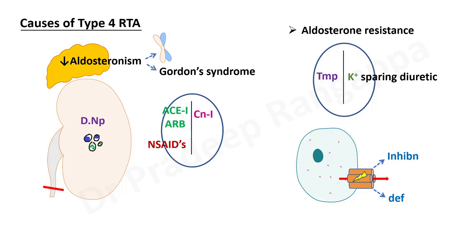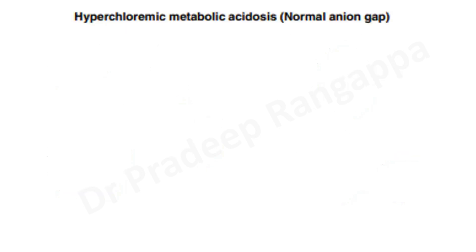In brief: type 1 is distal, type 2 is proximal. In proximal RTA, urine can acidify because there is less bicarbonate loss, but in type 1 and type 4, urine pH is more than 5.5. Type 4 is easy — it is hypoaldosteronism, sodium is unable to be retained, potassium is high causing hyperkalemia. Types 1 and 2 will have hypokalemic hyperchloremic acidosis.